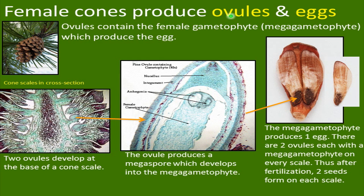The female cones produce the ovules and the eggs. The ovules contain the female gametophyte — the egg — the megagametophyte, which produces the egg. In the bottom left-hand diagram of a cone, we can see the cone scales in cross-section. The two ovules develop at the base of the cone scale. The ovule then produces a megaspore, which develops into the megagametophyte. We can see the female gametophyte, the archegonia, integument, and ovule containing the gametophyte. There are two ovules within each megagametophyte on every scale, so after fertilization, two seeds form on each scale.